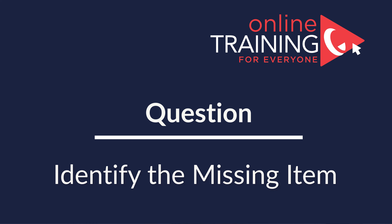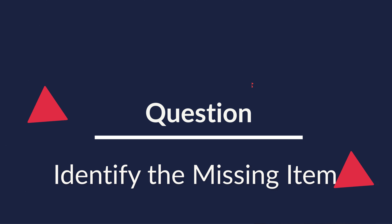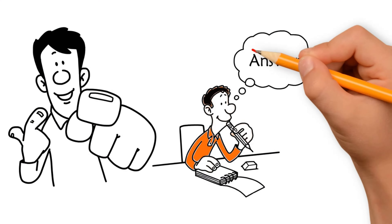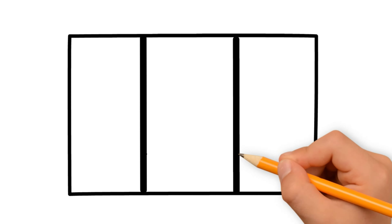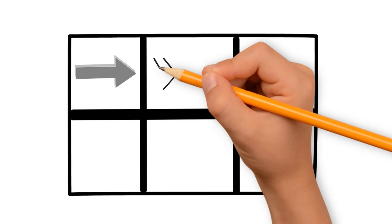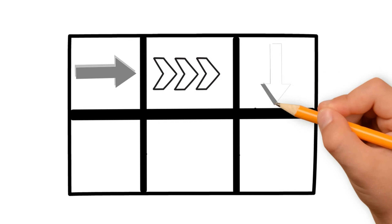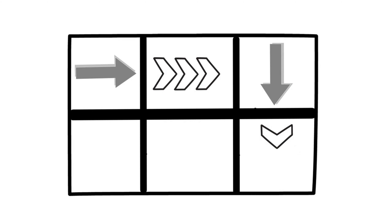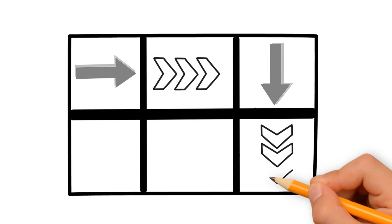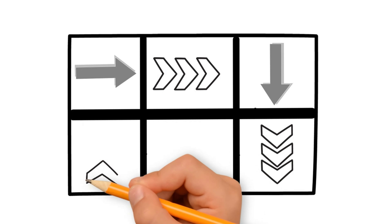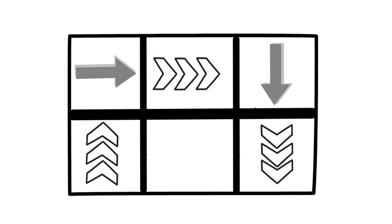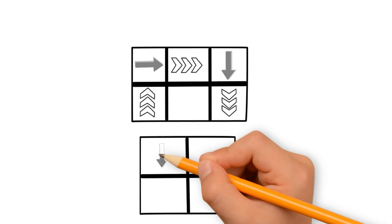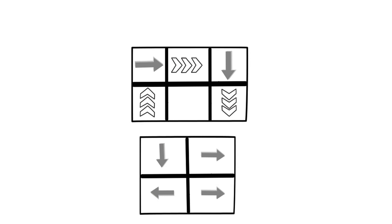I'm excited to share with you a cool question, which is easy to understand but doesn't have an obvious answer. You're presented with a 2x3 matrix that has arrows inside. There are two types of arrows: solid arrows, and arrows that consist of three different shapes. There are six possible spaces in the matrix. Five shapes are present and one is missing, highlighted by a question mark.